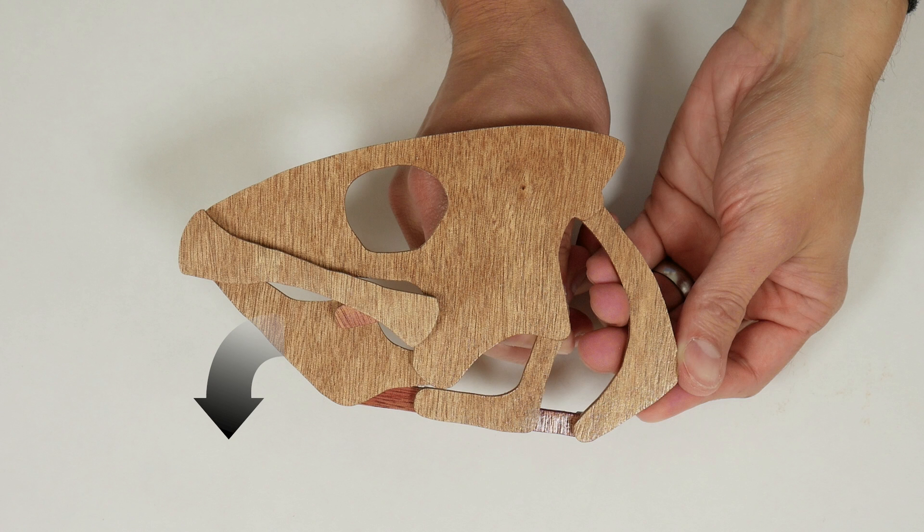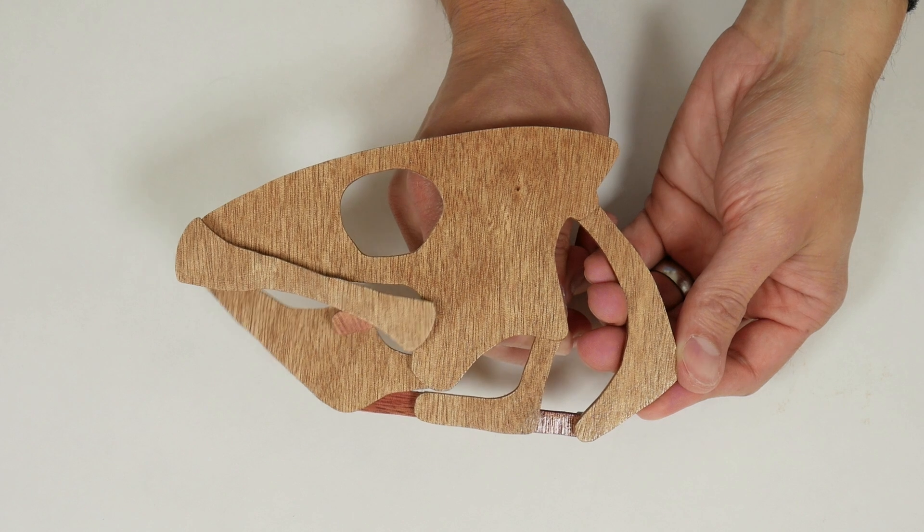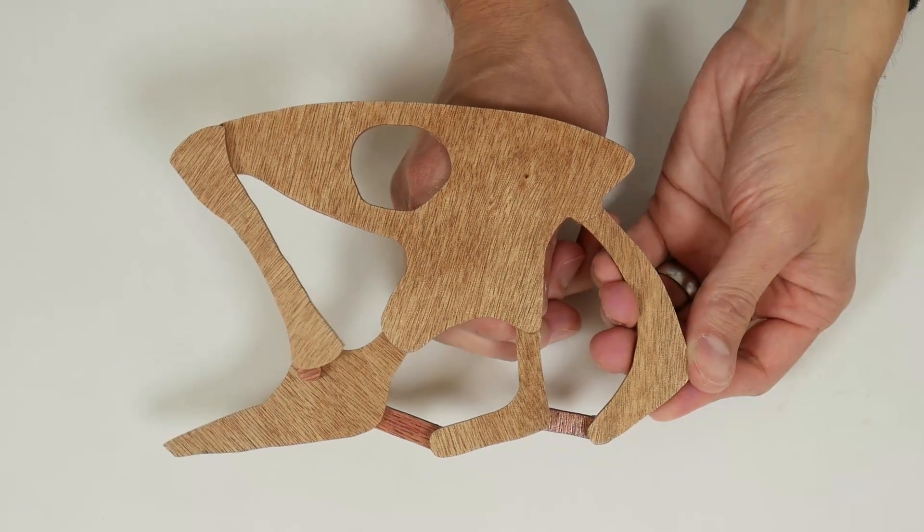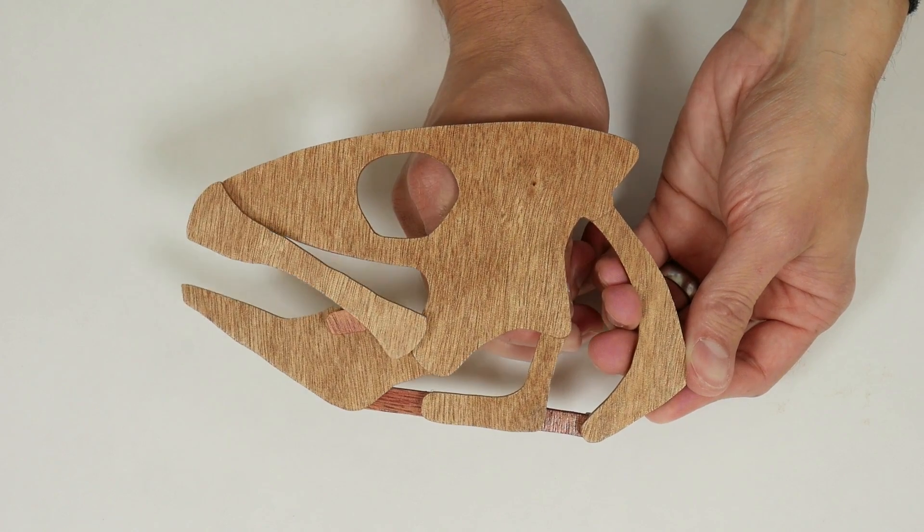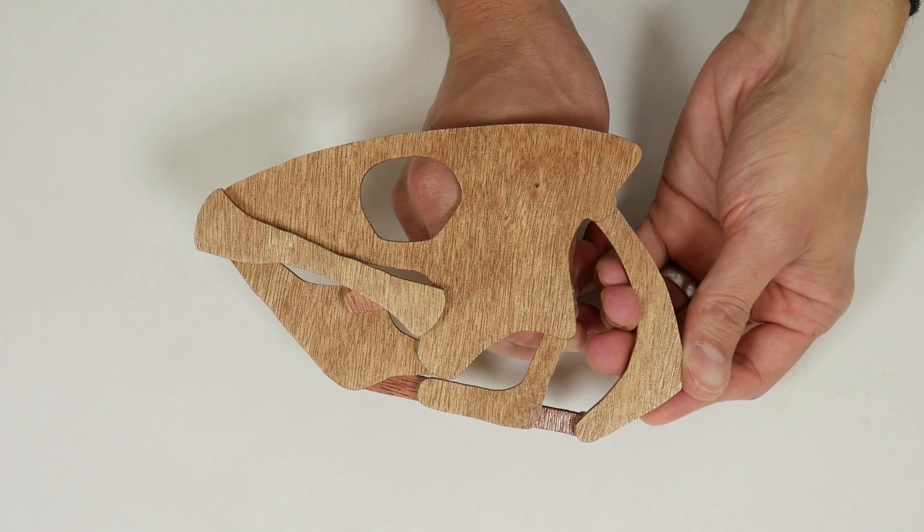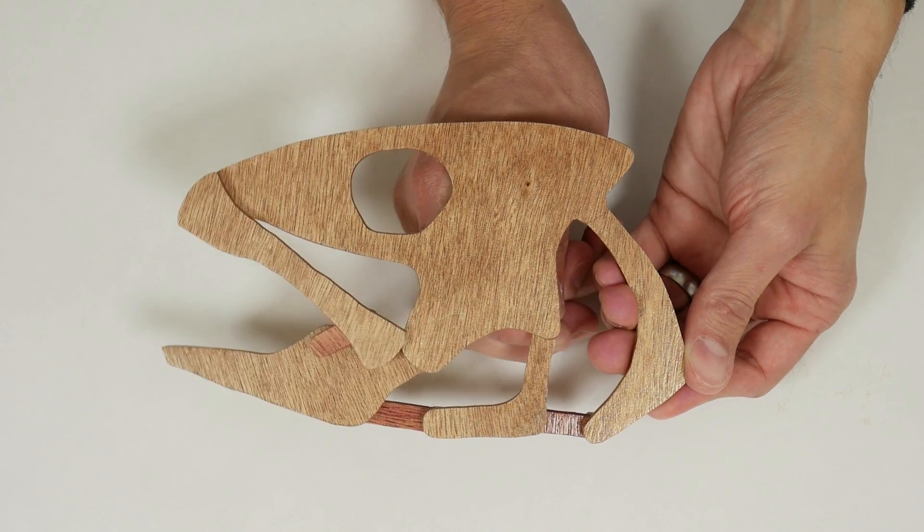As the lower jaw rotates down, the upper jaw swings out because it's connected to the lower jaw via the maxillomandibular ligament. The jaw is closed via a different complex muscular mechanism that's not shown here. This model is just meant to illustrate jaw opening.